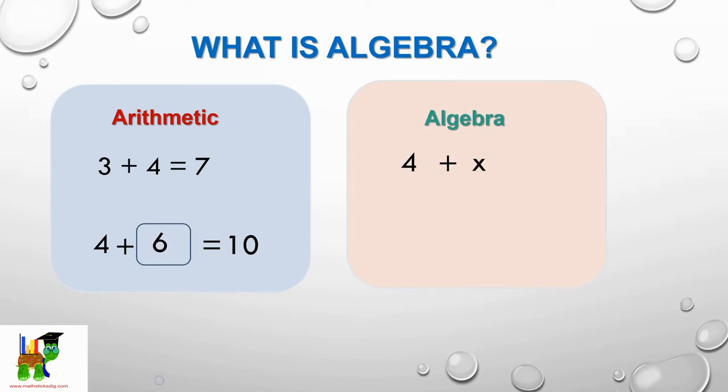In algebra, if we don't know a number, we use letters in the alphabet. So in this case, what do we add to 4 to get 10? We say 4 + x = 10, and we know already that x = 6 from our example in arithmetic.